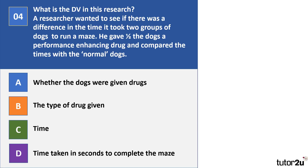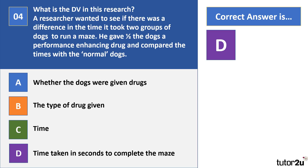Question 4. What is the DV in this research? A researcher wanted to see if there was a difference in the time it took two groups of dogs to run a maze. He gave half of the dogs a performance-enhancing drug and compared the times with the normal dogs. Is it A, whether the dogs were given drugs, B, the type of drug given, C, time, or D, time taken in seconds to complete the maze? Your correct answer is D. The reason it's D and not C is because C is not an operationalised dependent variable. Time taken in seconds is measurable, whereas 'time' alone is a little ambiguous.